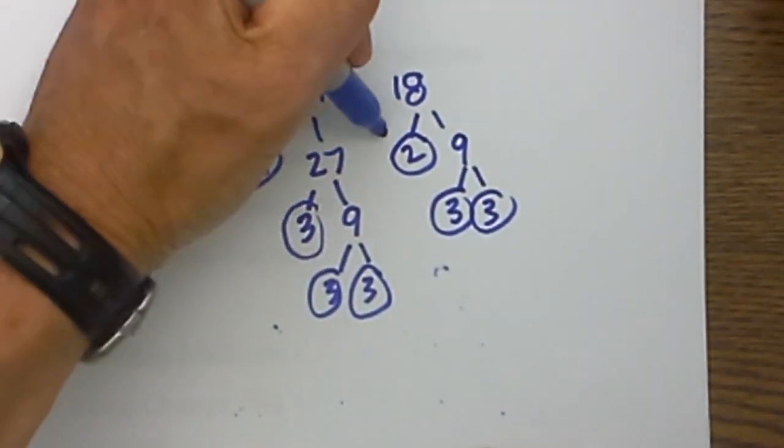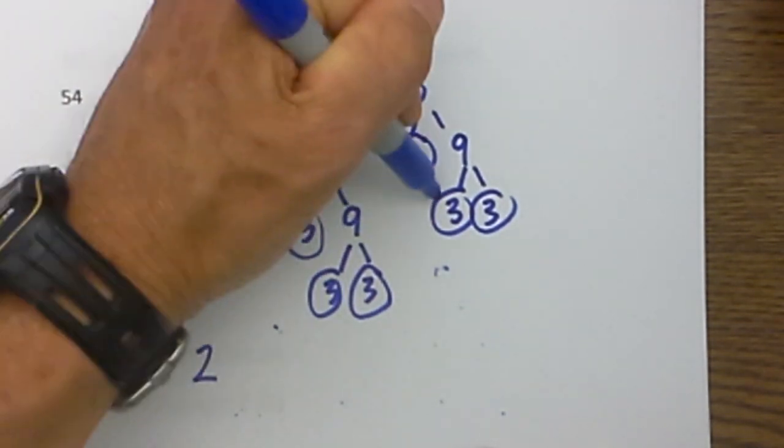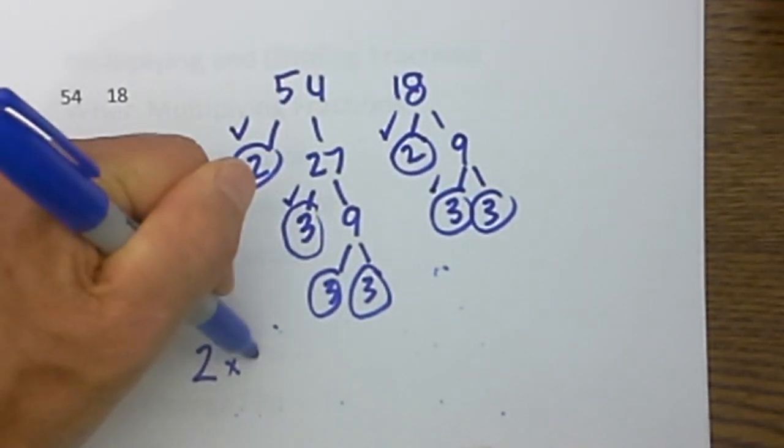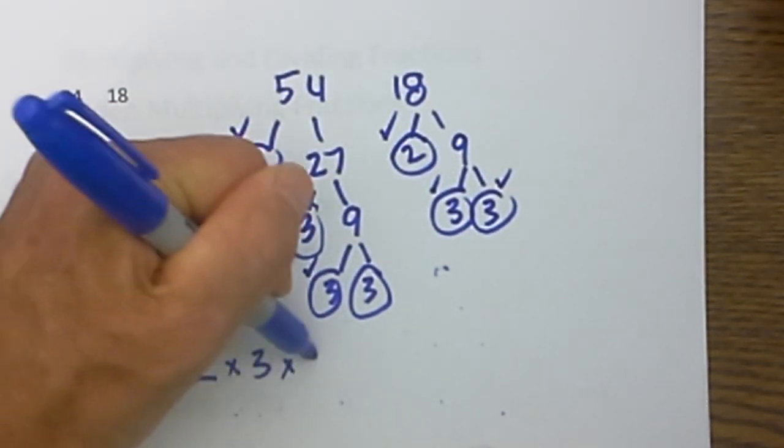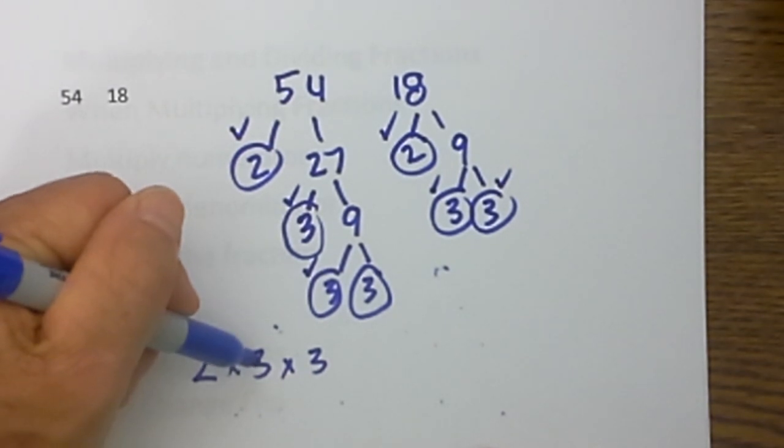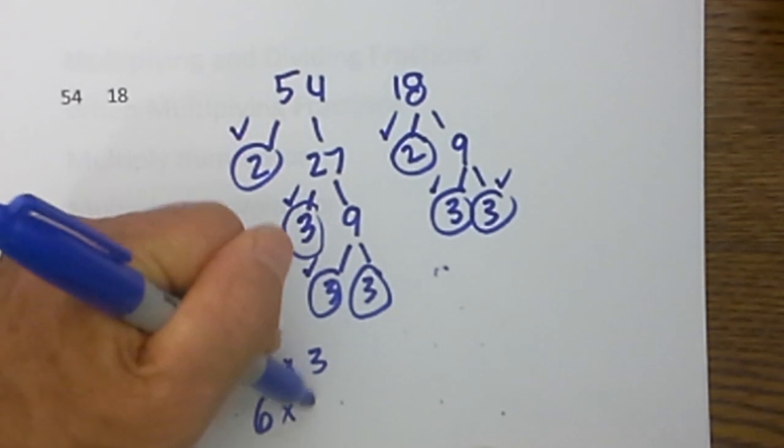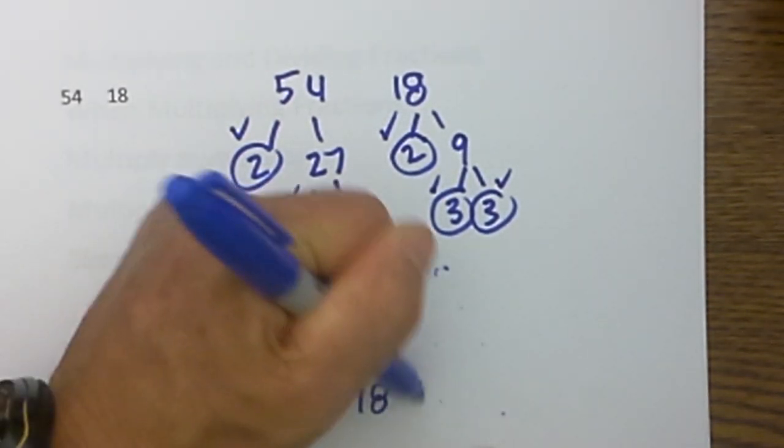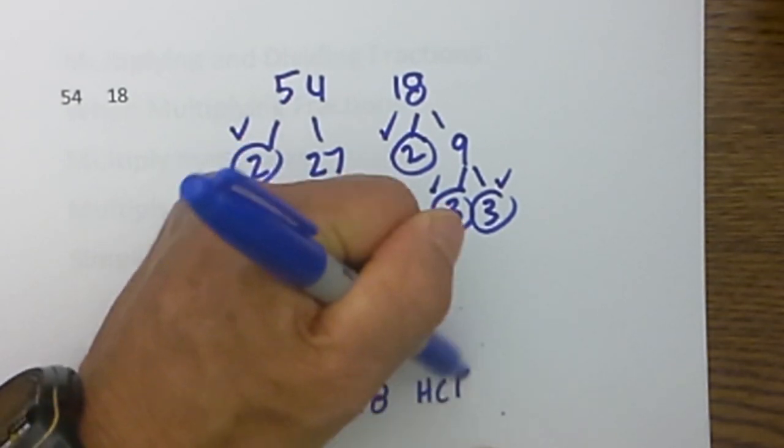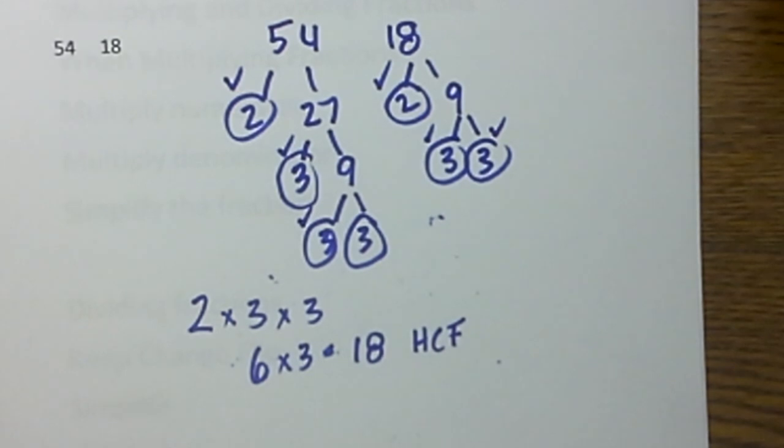I put a check mark by common ones, so I have a 2, and then we have a 3 and one more 3. So we have 2 times 3, which is equal to 6, and then 6 times 3 is 6, 12, 18. So the HCF for 54 and 18 is equal to 18. I hope that helps.